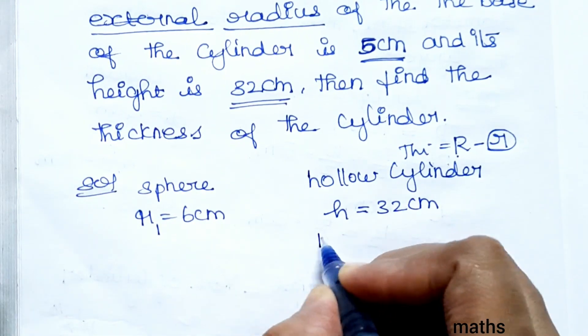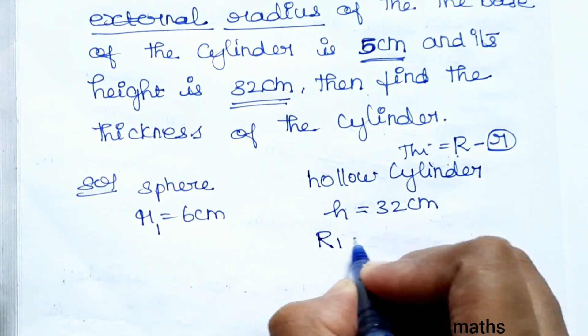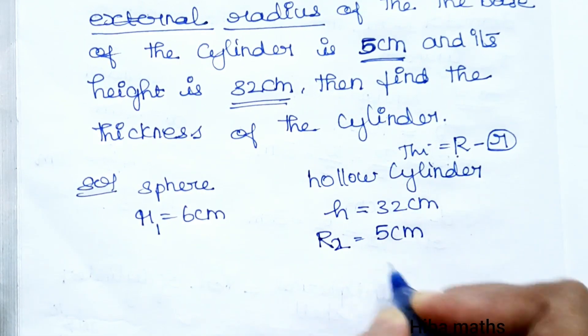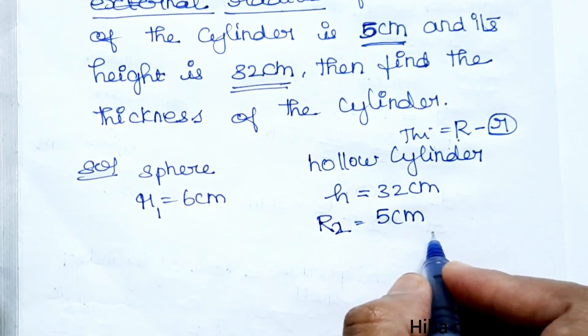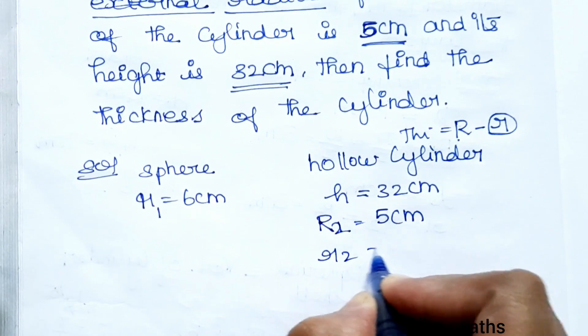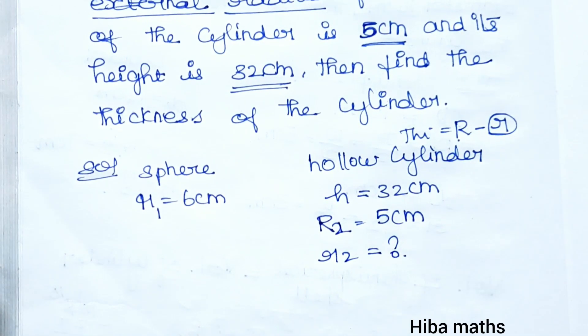Hollow cylinder height is 32 centimeters. The external radius R₁ is 5 cm. Small r₂ is the internal radius. This is the thickness.